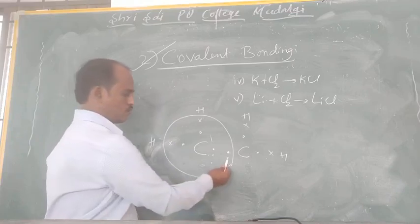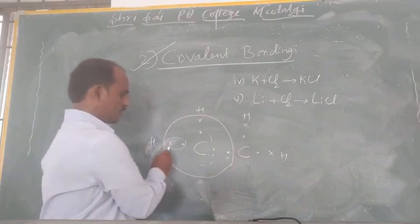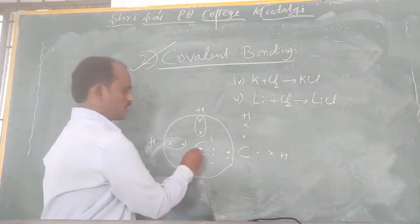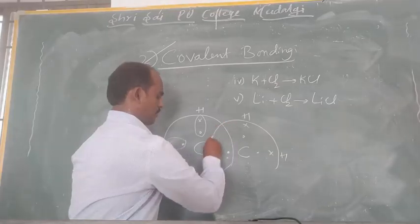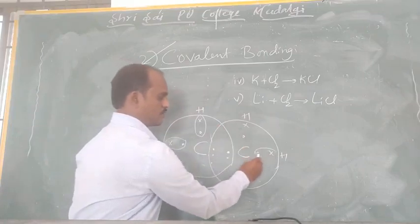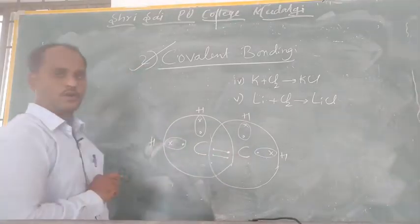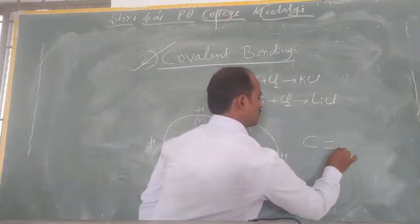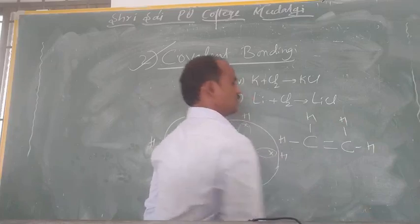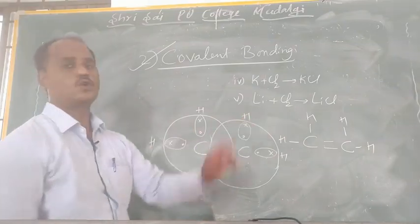Counting the electrons: 2, 4, 6, 8 — so from hydrogen's point of view it has bonded two electrons and hydrogen is stable. Both carbons are stable. There is a carbon-carbon double bond, so this forms C₂H₄, which is ethene. This is your C₂H₄, that is your ethene, and it forms covalent bonding.